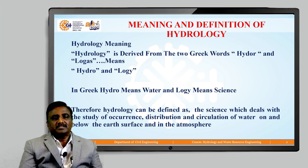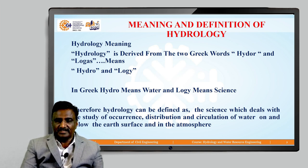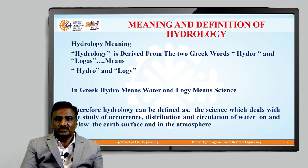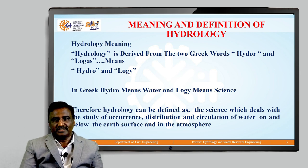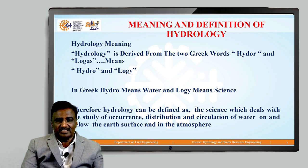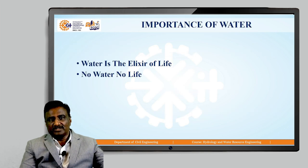We can define hydrology as the branch of civil engineering which deals with the study of water with respect to its occurrence, distribution, and circulation on and below the earth's surface as well as in the atmosphere. This is the meaning and definition of hydrology.